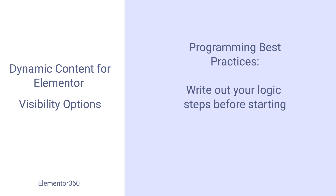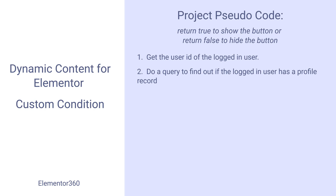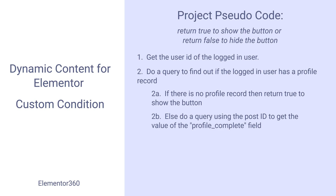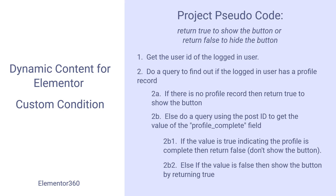When programming, it often helps to write out pseudocode or the steps in logic ahead of time. My plan: return true to show the button or return false to hide it. First, get the user ID of the logged-in user and query whether they have a profile record. If there's no profile record, return true and show the button. If there is a profile record, get the post ID, then query the value of the profile complete field. If the value is true — profile is complete — return false and hide the button. If false, return true and show the button.